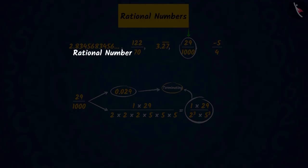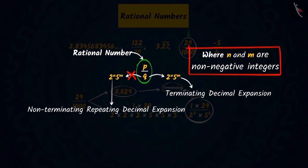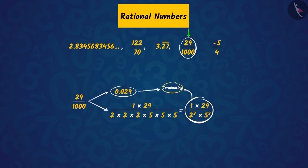Because we learned that in a rational number p upon q, if q is in the form of 2 raised to n into 5 raised to m, the decimal expansion of such a rational number will be terminating. And, if q is not in the form of 2 raised to n into 5 raised to m, the decimal expansion of such a rational number will be non-terminating, repeating.